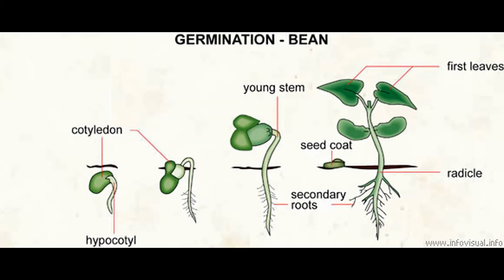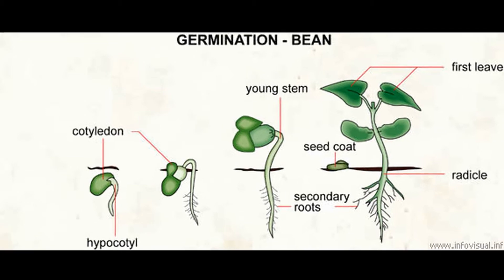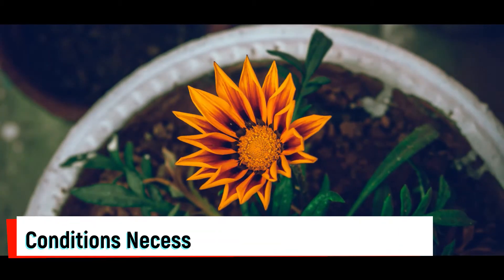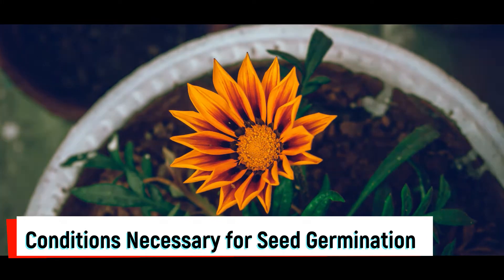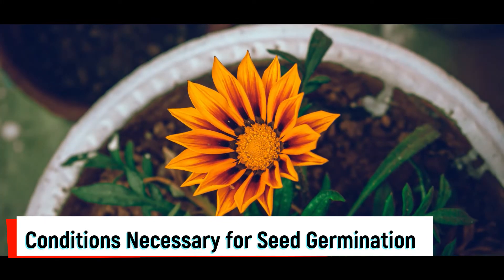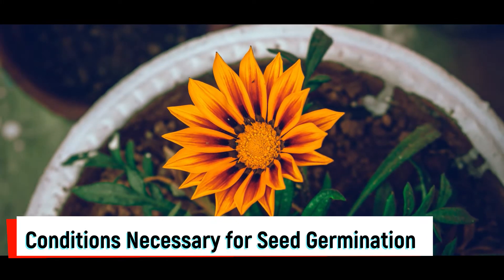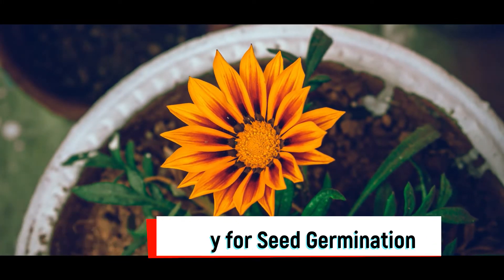In the final stage of seed germination, the cells of the seeds become metabolically active, elongate, and divide to give rise to the seedling.